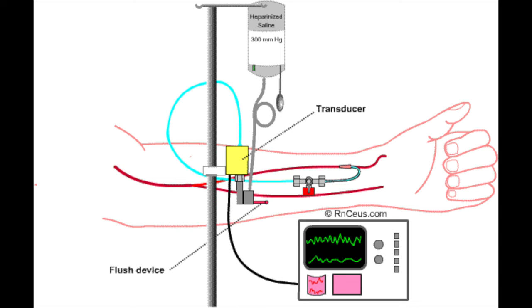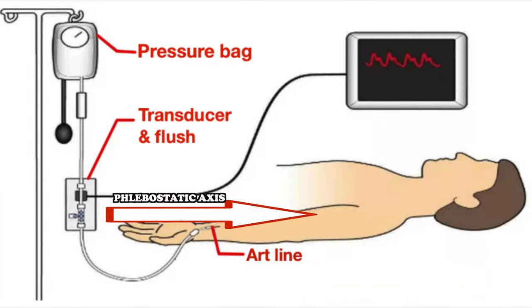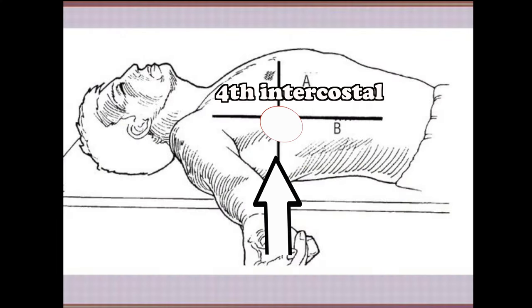Leveling the transducer: The transducer air reference stopcock should be at the level with the phlebostatic axis reference point. The phlebostatic axis reference point is at the fourth intercostal space at the mid anterior posterior diameter of the chest wall.